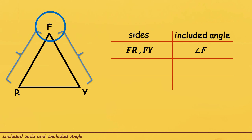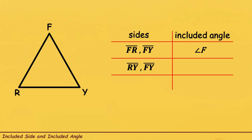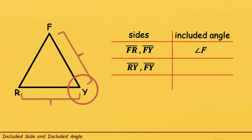Next, we are going to find the Included Angle of Line Segment RY and Line Segment FY. Let us find first Line Segment RY in the triangle, and Line Segment FY. What is the angle between these two sides? Kita natin na ang nasa gitna nila is Angle Y. So, the Included Angle of Line Segment RY and Line Segment FY is Angle Y.